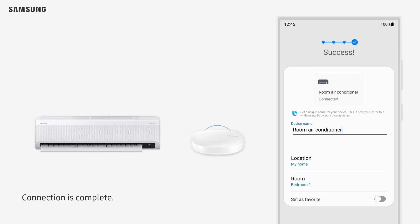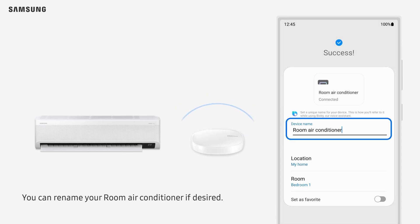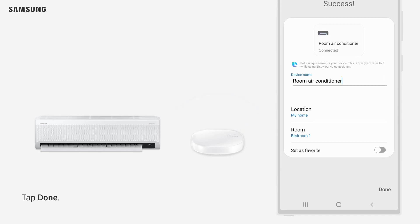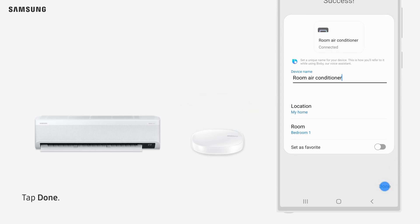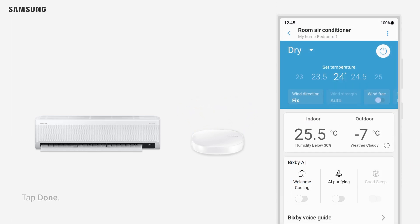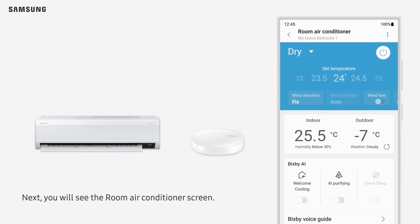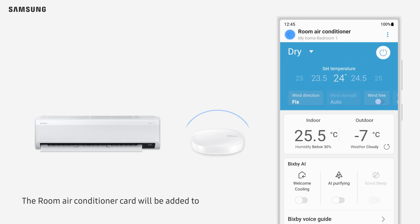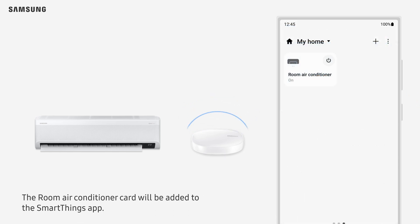The room air conditioner will be registered to your Samsung account. Connection is complete. You can rename your room air conditioner if desired. Tap Done. You will then see the room air conditioner screen, and the room air conditioner card will be added to the SmartThings app.